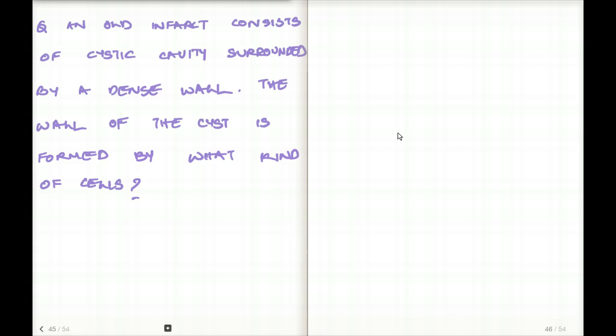So, in this question, it says, an old infarct consists of cystic cavity surrounded by a dense wall. The wall of the cyst is formed by what kind of cell? So, if there is an infarct in a cystic cavity, the wall of the cavity is going to be made of astrocytes. So, remember how I talked about if there is damage in the central nervous system, astrocytes are going to come together to take care of that problem. So, it's going to make a wall around the cystic cavity so that it's kind of protected, or it's kind of shut away from the rest of the central nervous system. So, in this case, it's going to be an astrocyte.